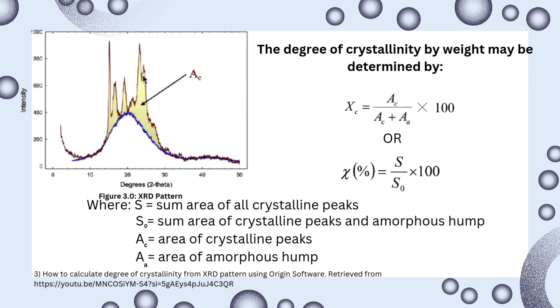The degree of crystallinity by weight may be determined by the formulas shown. The degree of crystallinity equals the area of crystalline peaks divided by the sum of area of crystalline peaks and amorphous hump. This can be expressed as Xc = A/(A+Aa) × 100 or χ(%) = S/S₀ × 100.